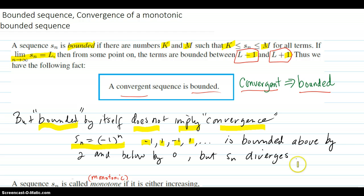It's bounded above by two, for example, or three or any number, and below by zero, for example. So it's bounded, but it diverges because it has no limit.